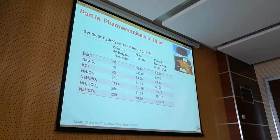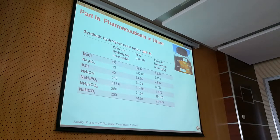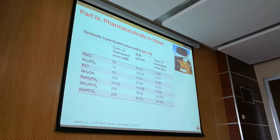Our idea is that it is much more advantageous to treat pharmaceuticals at the urine stage: you treat a much smaller volume, the pharmaceutical concentration is a lot higher, and it is easier to treat. Secondly, there is increasing interest in recovering nutrients from urine — urine has very high concentrations of nitrogen and phosphorus. There is a trend toward infrastructure designed to separate urine from the rest of wastewater for nutrient recovery, and we think that is a great opportunity for pharmaceutical control as well.